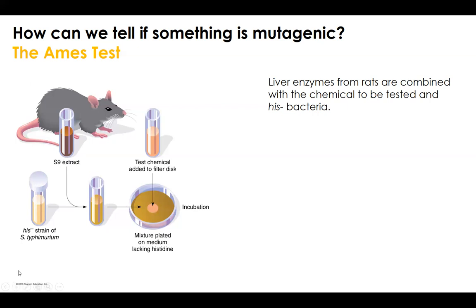We're also going to have specialized bacteria. These are His-, which means they cannot make the amino acid histidine. These are like those auxotrophic mutants we studied in the last chapter. It's important not to get caught up in the His- aspect as if that's the discovery — previously we focused on which amino acid a bacterium can't make, but this is a different thing. The important part isn't that these are specifically His-.